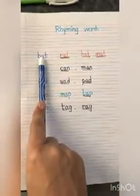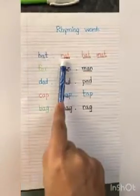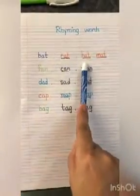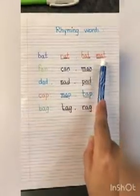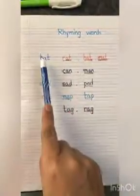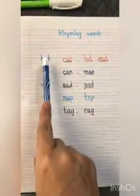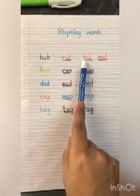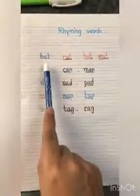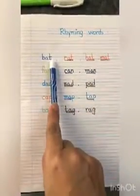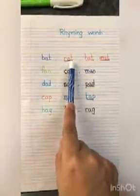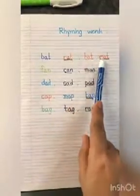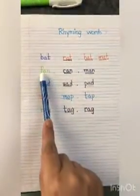What are the rhyming words of bat? Rat, hat, and mat. Bat, rat, hat, mat.